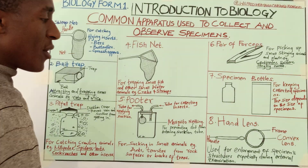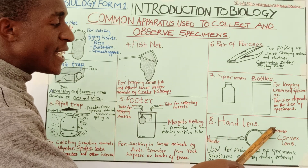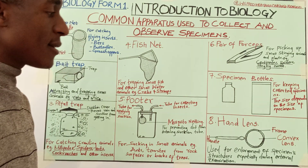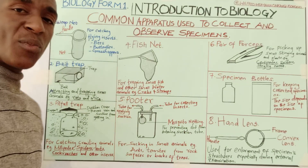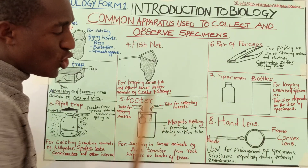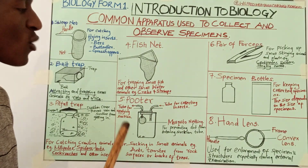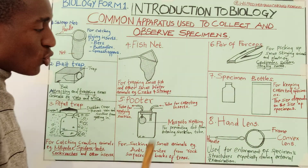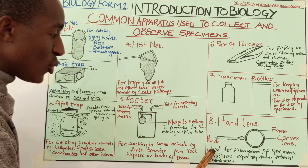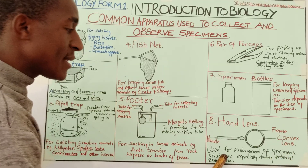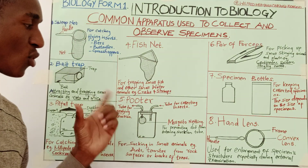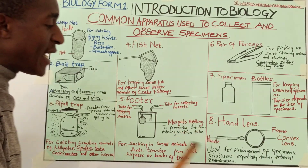Most students label the handle and frame properly, but when it comes to the lens they say just 'lens,' which is wrong. You must specify the type — it is a convex lens. Others say 'objective lens,' which is also wrong because objective lenses are found in microscopes. The three parts are very crucial. The hand lens is used for enlargement of specimen structures, especially during external examination — for example observing the cockroach or grasshopper to see the legs, wings, and antennae.